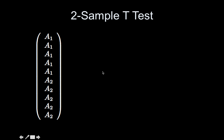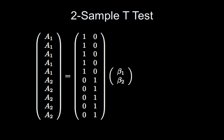The setup I'm going to use for the two-sample t-test has a dependent variable with four subjects from group one and five unique subjects in group two. The groups could be patients and controls, males and females — it doesn't matter. This is a cell means setup, which I'll cover in more detail when I go over ANOVA. A two-sample t-test is actually an ANOVA — a one-way ANOVA with two levels.